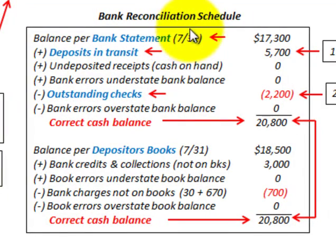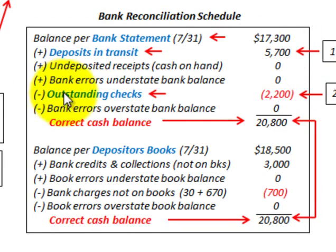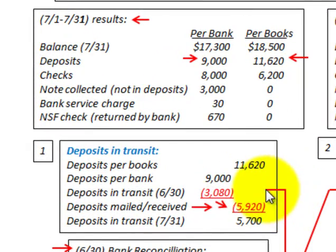Let's go back to our bank reconciliation schedule. At the end of the month, we have a cash balance of $17,300. We're going to calculate the deposits in transit and add those to the beginning cash balance, then subtract the outstanding checks, to come up with the correct cash balance. Let's show how to do the calculations. For our deposits in transit, here's how we calculate it — we take the deposits per the books.